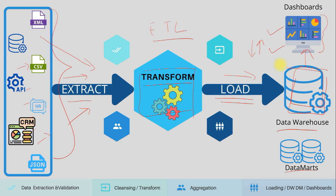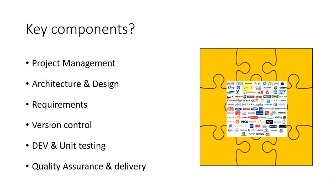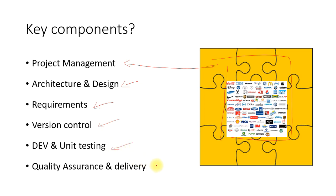This is the overall ETL framework. If you take any data project like a puzzle, each piece would be something like: project management, architecture and design, requirements and analysis, version control, source code development, unit testing, QA, and delivery. These are the key mandatory components when executing any ETL or other projects.